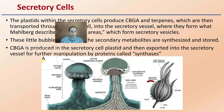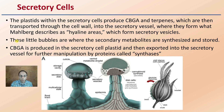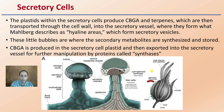The plastids within the secretory cells produce CBGA and terpenes, which are then transported through the cell wall into the secretory vesicles, where they form what Albrecht describes as hyaline areas — secretory vesicles in that area. These little bubbles are where the secondary metabolites are synthesized and stored. CBGA is produced in the secretory cell plastid and then exported into the secretory vesicle for further manipulation by proteins called synthases — these are enzymes. Most growers just look at whether it's cloudy or clear, but there is a lot more going on in that region than most growers realize. Hopefully, future scientific discoveries can unlock some of these pathways so we can better understand exactly what's going on in these trichome structures.